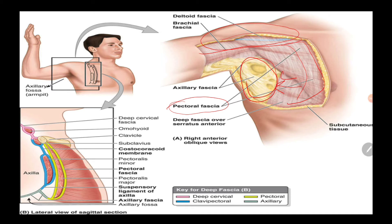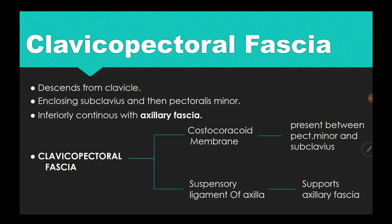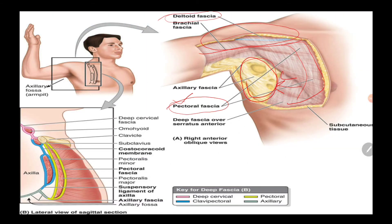The deltoid fascia is the fascia above the deltoid muscle. Another point about the pectoral fascia is that during dissection of the chest, it is dissected easily and can be seen on the pectoralis major.